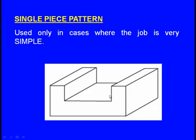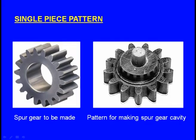Let us see all these patterns one by one. The single piece pattern is used only in cases where the job is very simple. One application is making a spur gear using the casting process — the pattern will be a single piece like this.